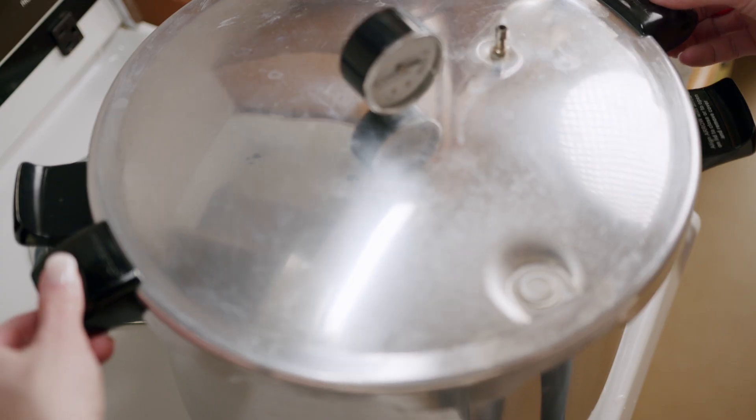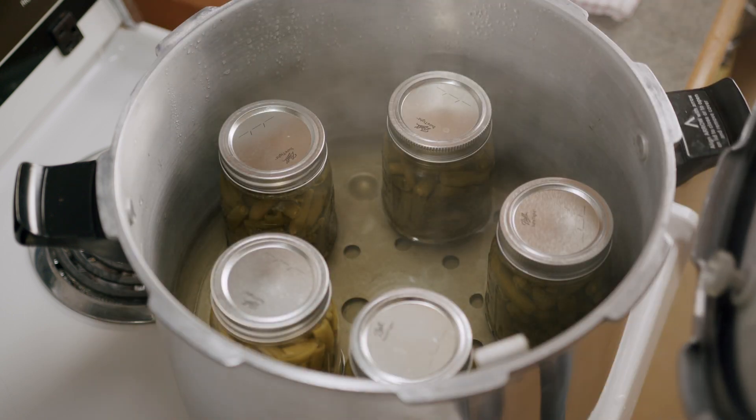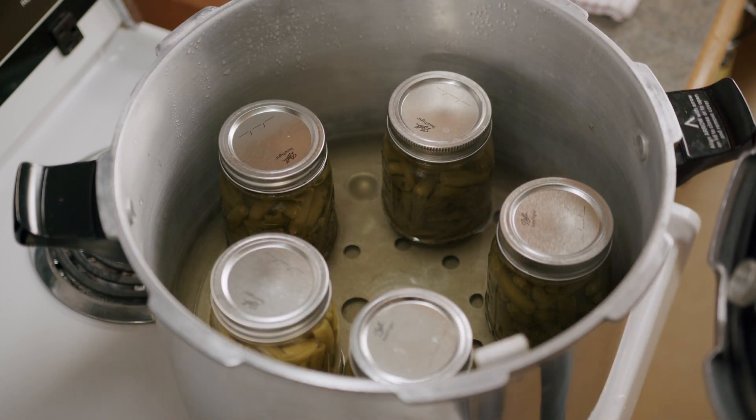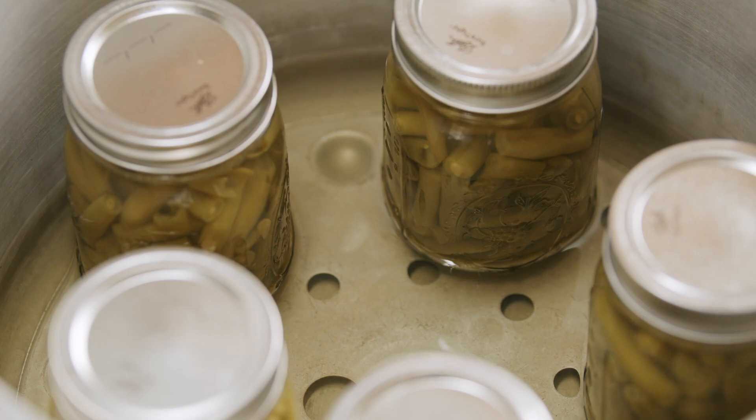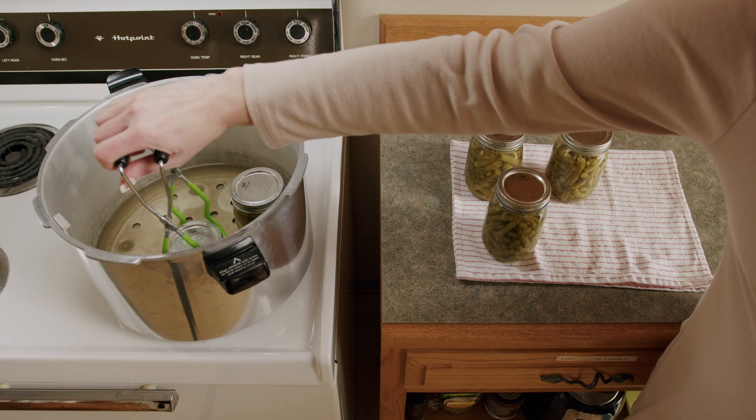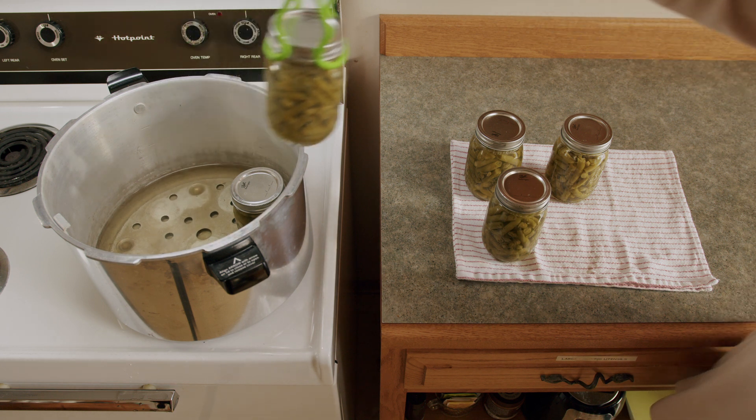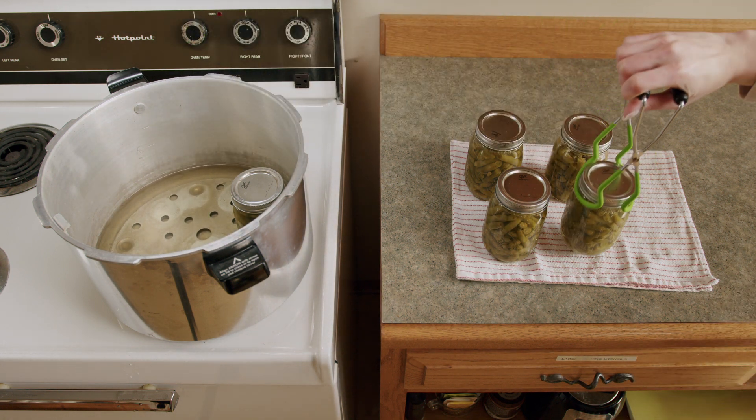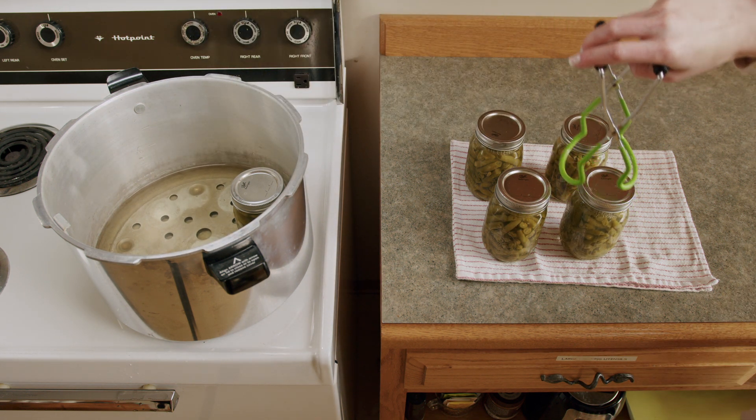Unfasten the lid and remove it carefully. Open the lid away from you so that the steam does not burn you. Leave the jars in the canner for 10 minutes to keep liquid from leaking out. Then carefully remove the jars using a jar lifter by lifting them straight out of the canner. The water on the lids will evaporate.